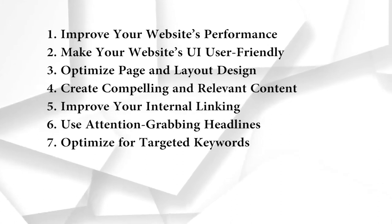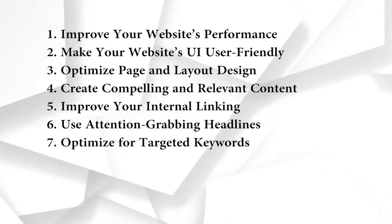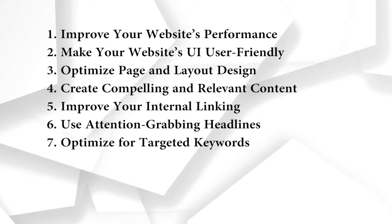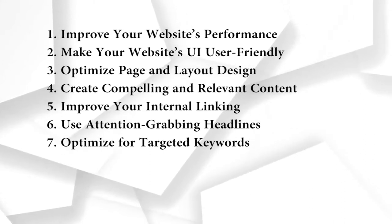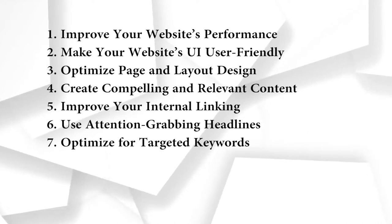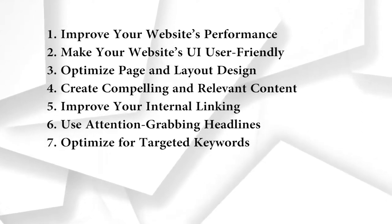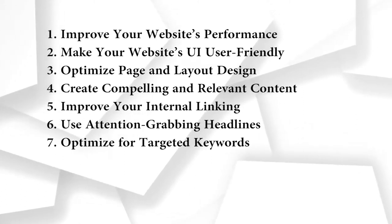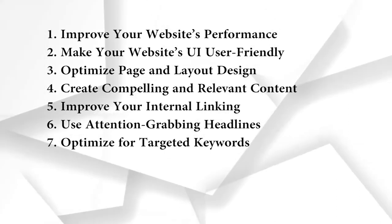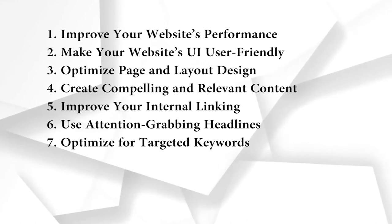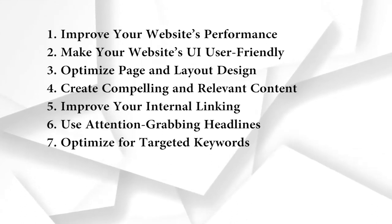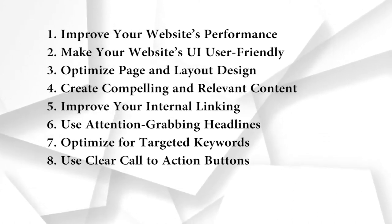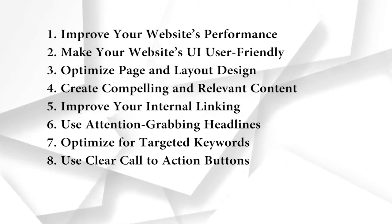Number seven: optimize for targeted keywords. Imagine searching for information online and typing in a specific keyword — suddenly a website magically appears at the top of the search results, perfectly addressing your query. By understanding the keywords your audience is searching for and strategically incorporating them into your website's content, you increase your chance of being discovered. No matter how great your content is, if it isn't search engine optimized, the chances of it appearing on any SERPs will reduce drastically.